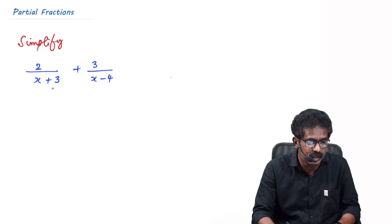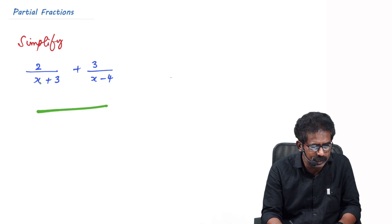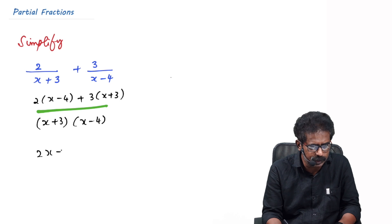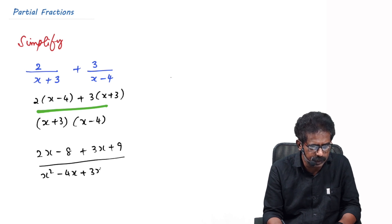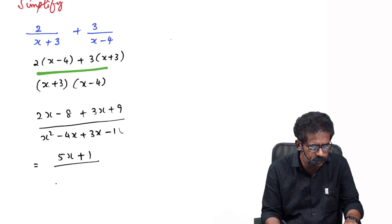All of you know how to simplify this expression: 2/(x+3) plus 3/(x−4). What we do is take the LCM. The LCM here is (x+3)(x−4). So you get [2(x−4) + 3(x+3)] over (x+3)(x−4). When you expand you get 2x−8 plus 3x+9 in the numerator, and x²−4x+3x−12 in the denominator. Simplifying, you get 5x+1 over x²−x−12.